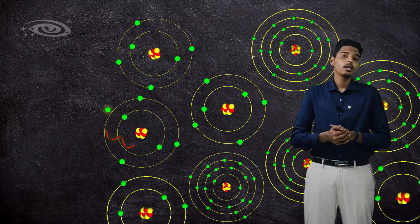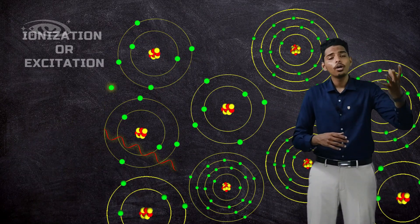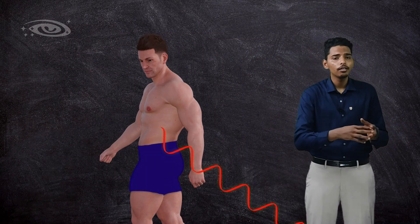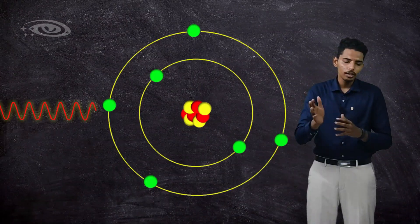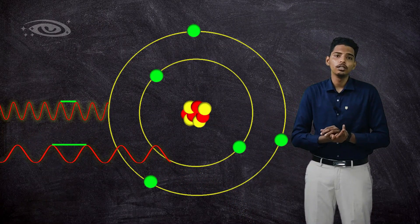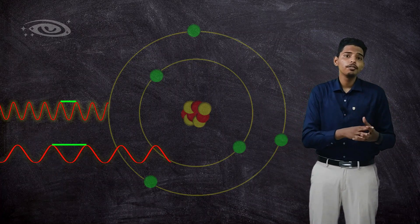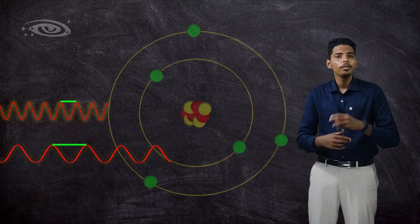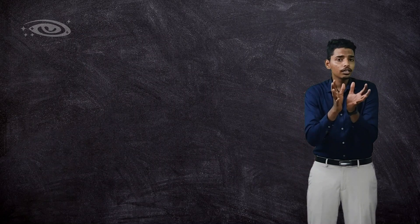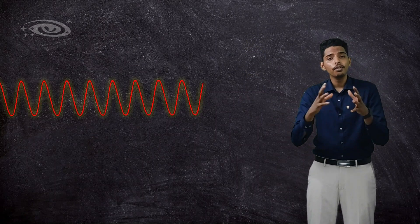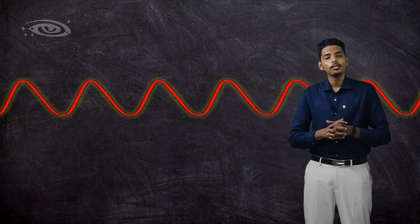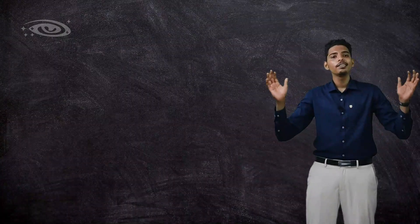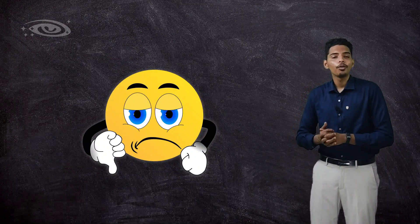The ionized electron and the scattered X-rays will have sufficient energy to cause another ionization process in neighboring atoms of the matter, or they may exit the matter without further interaction. The scattered X-ray photon energy and wavelength differ from the incident photon — the scattered energy is less because energy was transferred to the electron. When X-ray energy decreases, the wavelength becomes longer, since X-ray energy is inversely proportional to wavelength. Compton scattering is therefore not useful for producing an image — it just produces noise in the radiographic image.